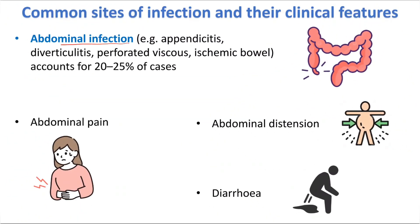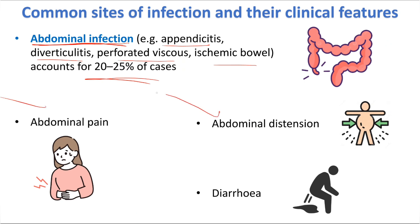Abdominal infections are the second most common, like appendicitis, diverticulitis, perforated viscus, and ischemic bowel, accounting for about 20% to 25% of cases of sepsis. The patient usually presents with abdominal pain, distension, diarrhea, or other symptoms.